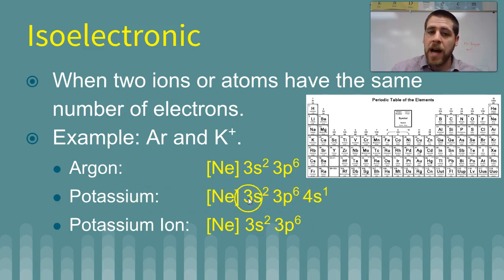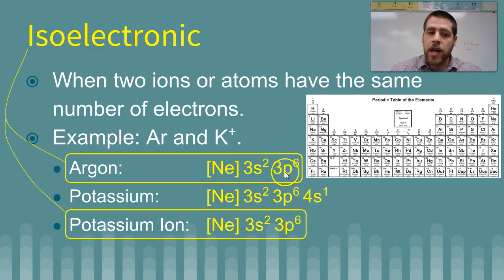Now, the potassium ion then would lose that 4s1 electron, and so it would go back down to 3p6, which is the same configuration as argon. So the argon atom and the potassium ion are isoelectronic.